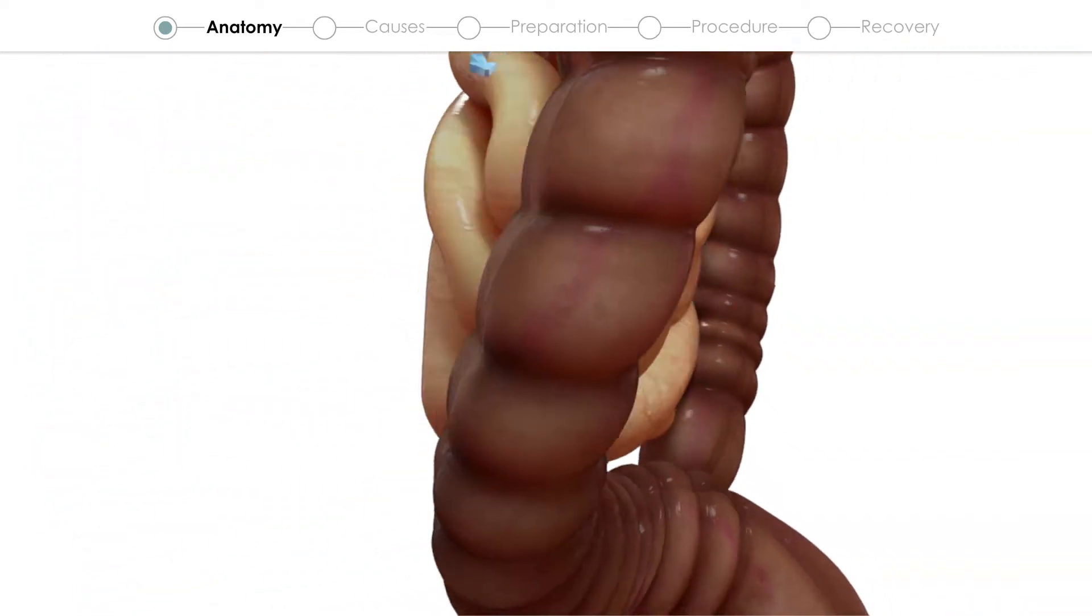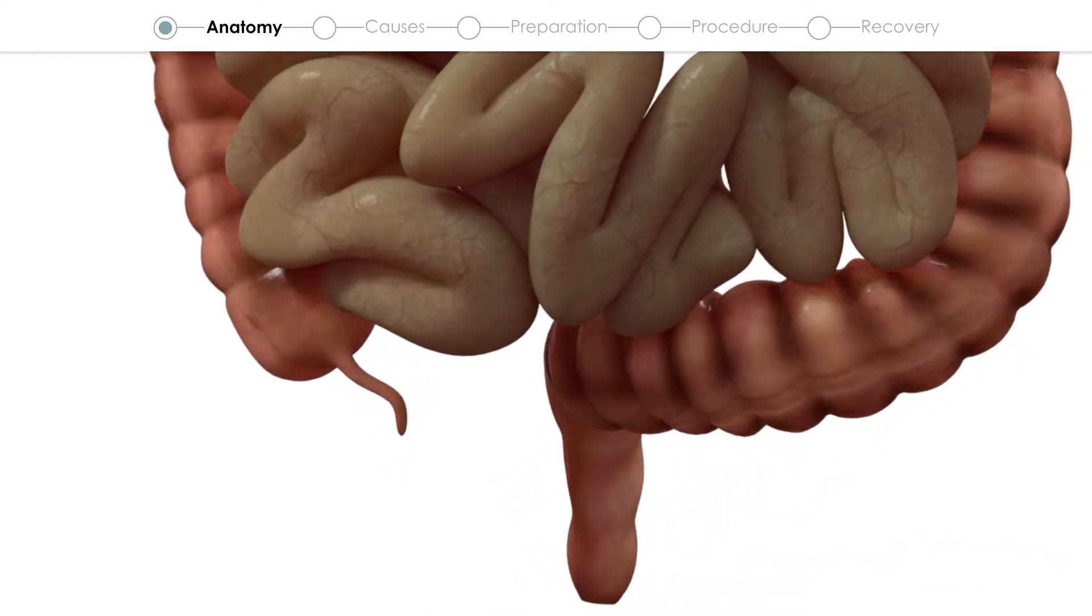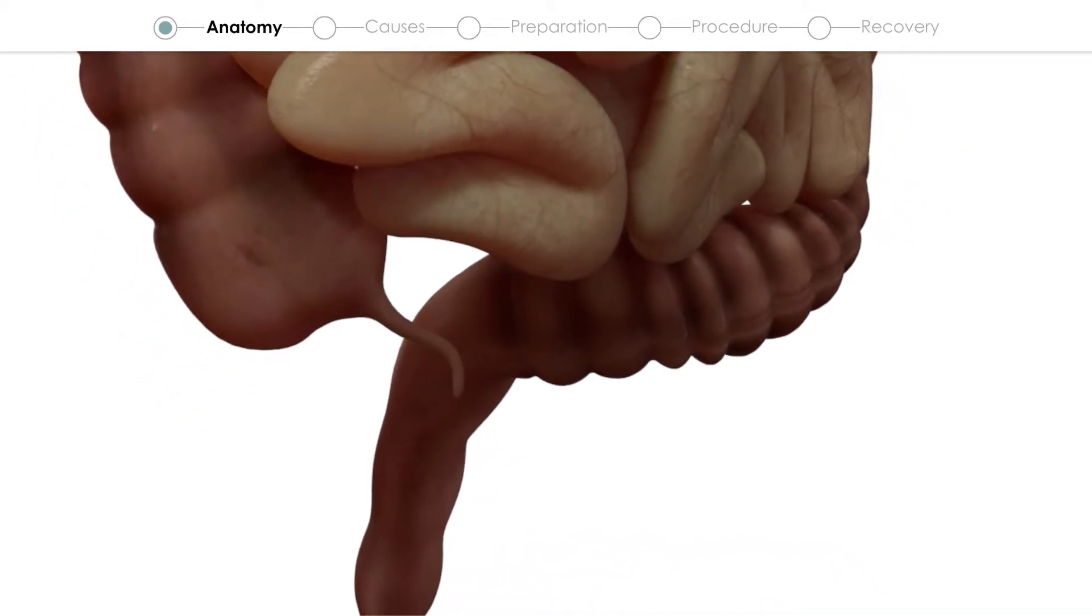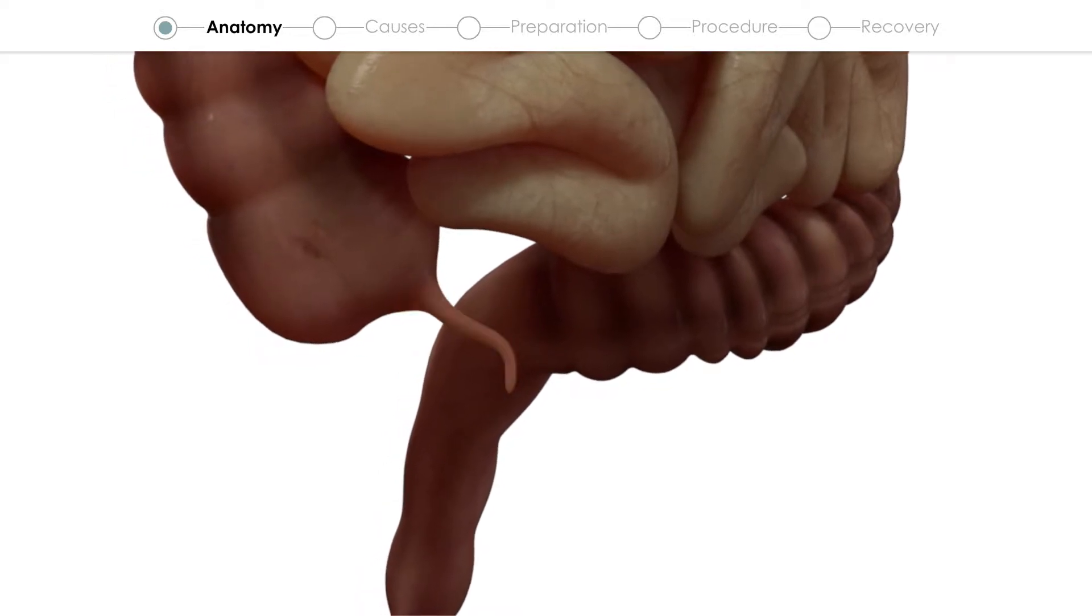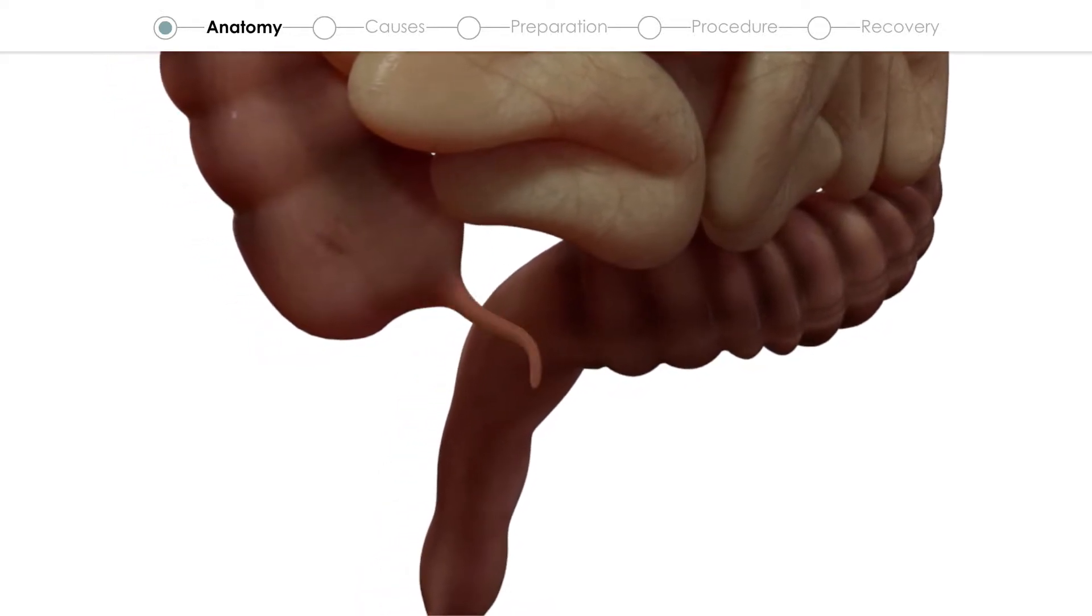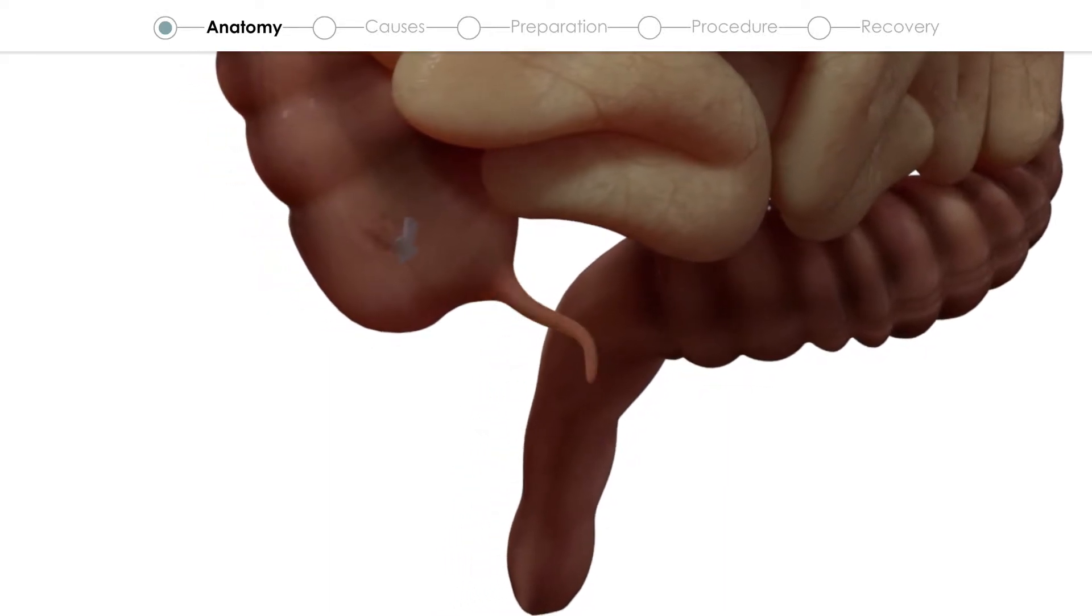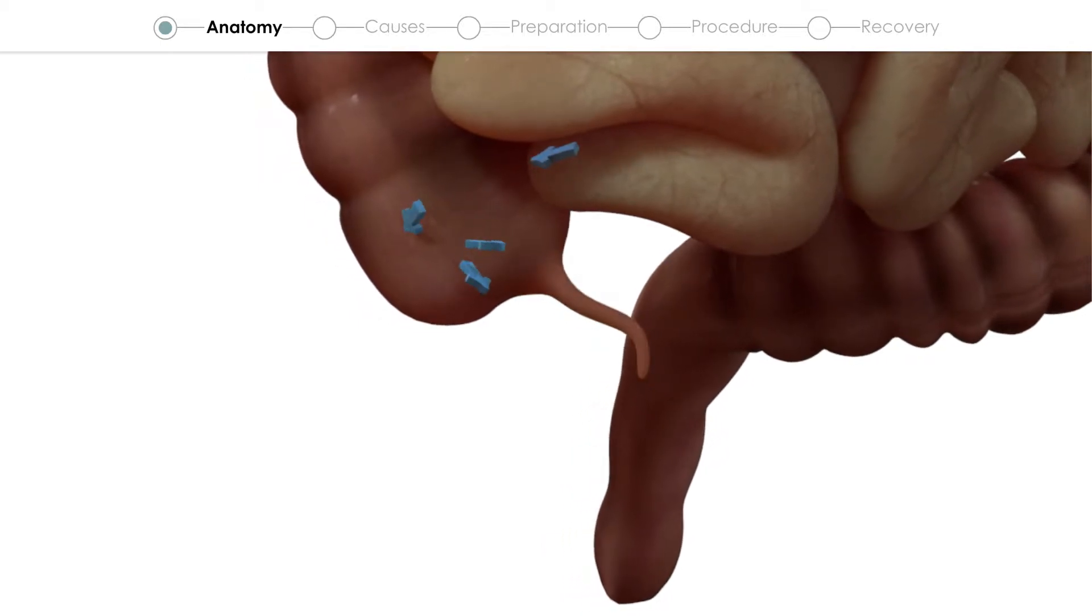The small intestine continues into the colon, the first part of which is called the cecum, to which is attached the appendix. The appendix is a small tube, around 10 cm long. The function of the appendix is still unknown, but it can be removed without affecting the normal functions of the human body.